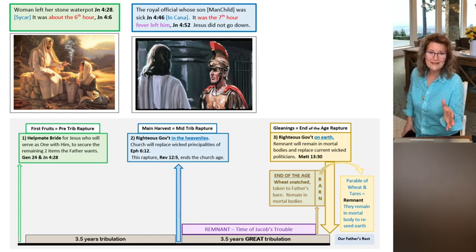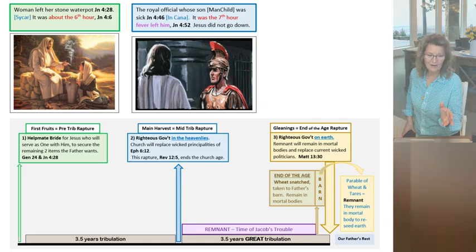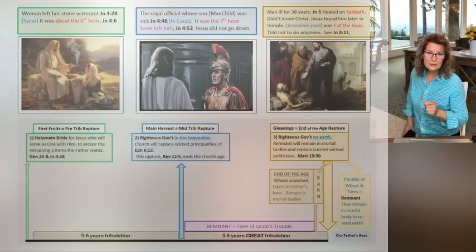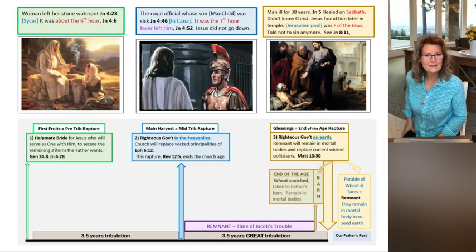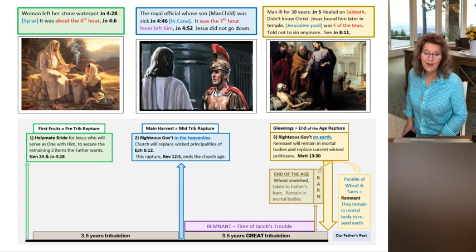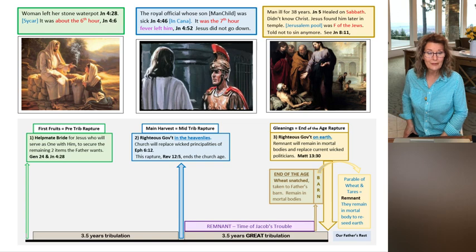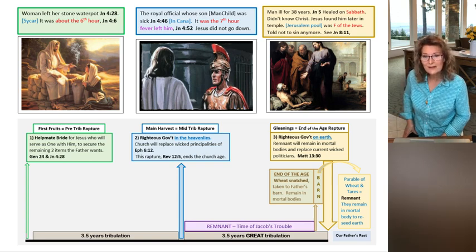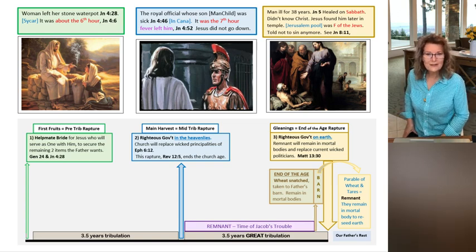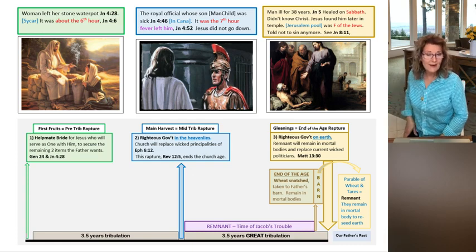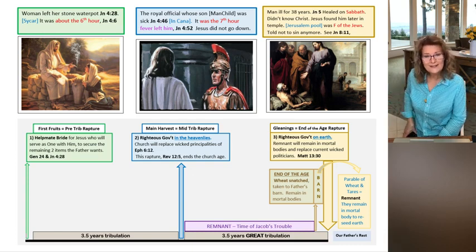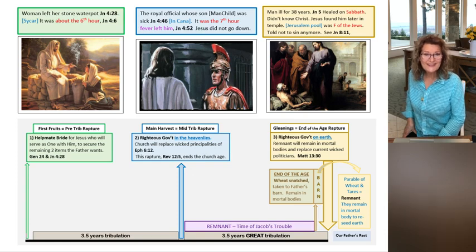Then the next thing we see Jesus do in the book of John is he goes to the pool at Bethesda, and it clearly shows us that he sought out this man, and it was very specific. The man had been ill for 38 years. Jesus heals him. He doesn't even know who Jesus is. Jesus slips off, and then later, Jesus looks for him and finds him in the temple.